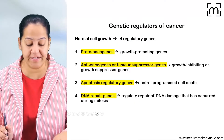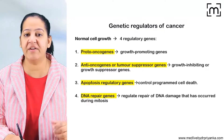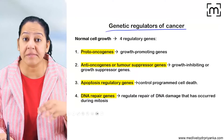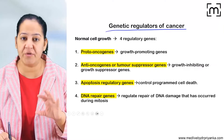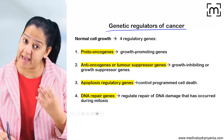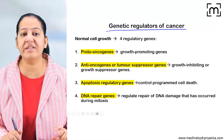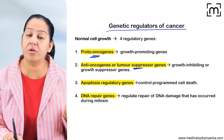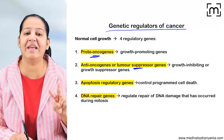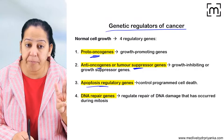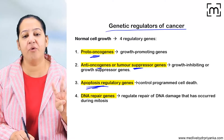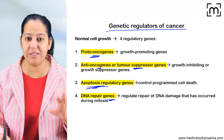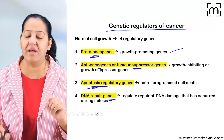Let's start with the genetic regulators of cancer. How many genetic regulators are there? There are four types of genes that cause cancer. Because of mutation of these four genes, cancer can occur. We will be discussing the first one — proto-oncogenes — in this session.